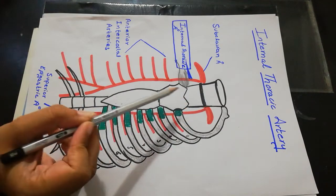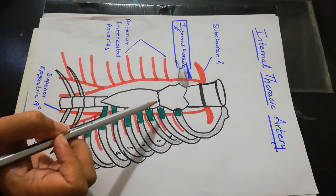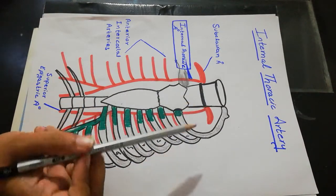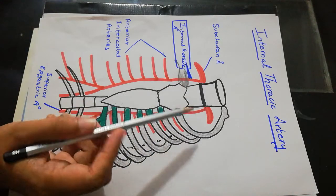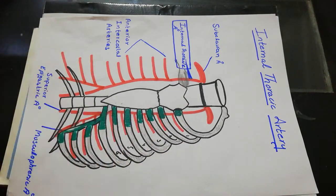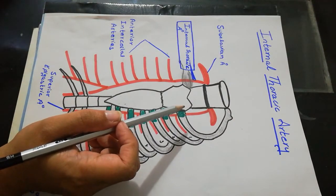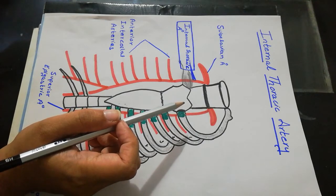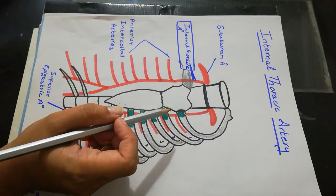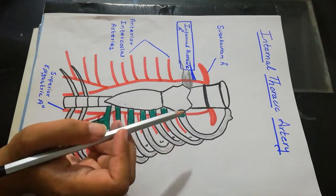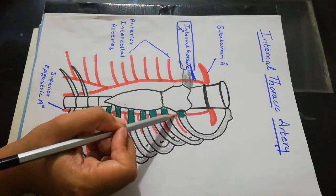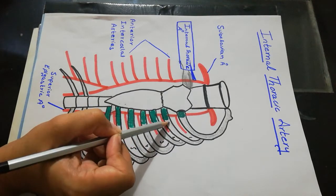Posteriorly, in its upper part, we have the parietal pleura and endothoracic fascia. The endothoracic fascia is a layer of deep connective tissue present deep to the intercostal spaces and ribs, separating these structures from the underlying pleura.